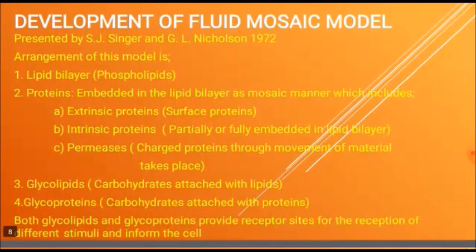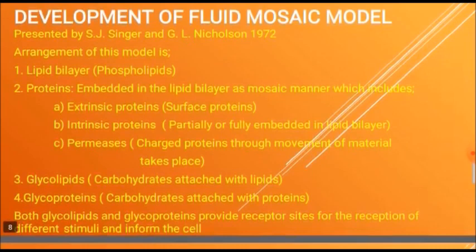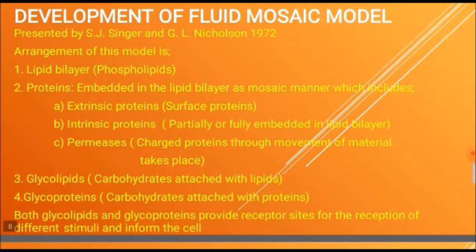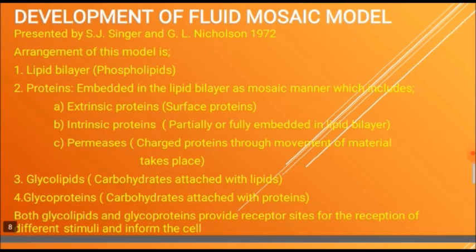The arrangement of this model basically includes: lipid bilayer, proteins, glycolipids, and glycoproteins. The lipid is composed of phospholipids, and proteins are embedded in the lipid bilayer. These include extrinsic proteins, intrinsic proteins, and permeases. Extrinsic proteins are also known as surface proteins, while intrinsic proteins are partially or fully embedded in the lipid bilayer.